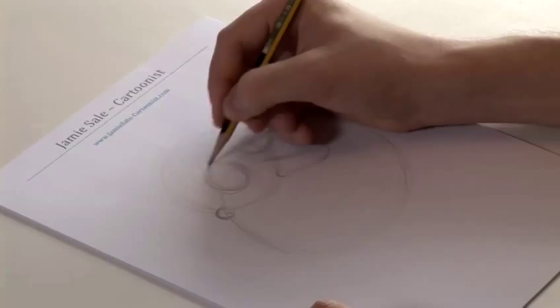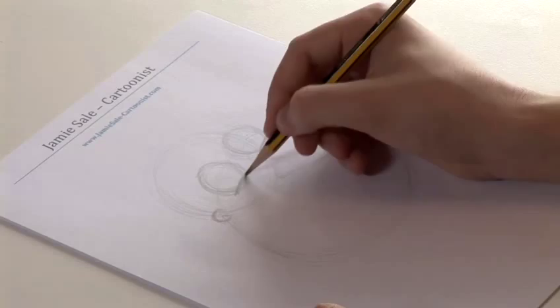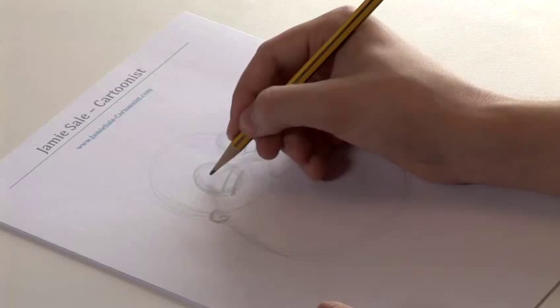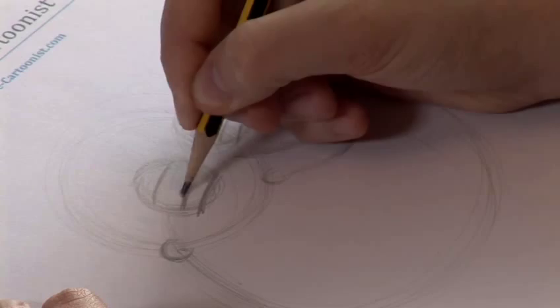As he's smiling, we'll put that expression in his eyes here by sort of cutting them off at the bottom. His eyes are slightly squinted as well, so we'll need to put in his eyelids at the bottom and the top. And then we'll put in his pupils here, which you don't see them fully, but they come out from the bottom of his bottom eyelid there.